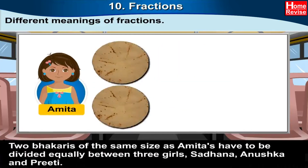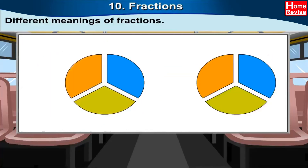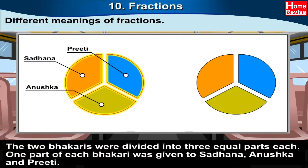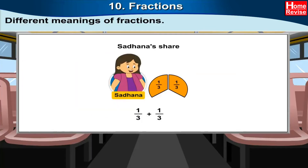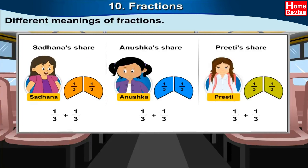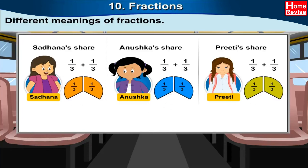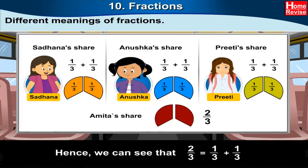Two bhakris of the same size as Amita's have to be divided equally between three girls: Sadhana, Anushka, and Preeti. The two bhakris were divided into three equal parts each; one part of each bhakri was given to Sadhana, Anushka, and Preeti. Sadhana's share: one upon three plus one upon three. Anushka's share: one upon three plus one upon three. Each girl was given a one-third part twice, that is each got one upon three plus one upon three. Hence, two upon three equals one upon three plus one upon three.